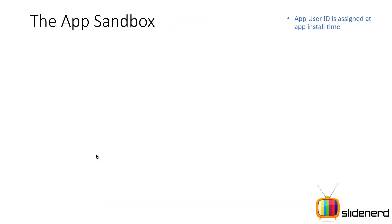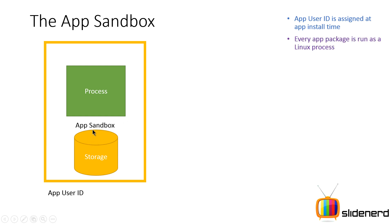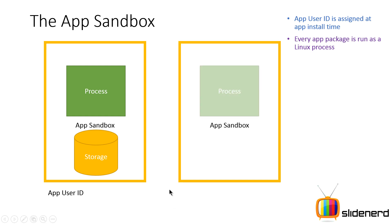When you install an app, a unique ID is assigned to that app at the time of installation. There is a unique ID for your app, it has a process with the same name as the package name, and it has a folder where it can put its files — like shared preferences or normal files. The same applies to every app you install.